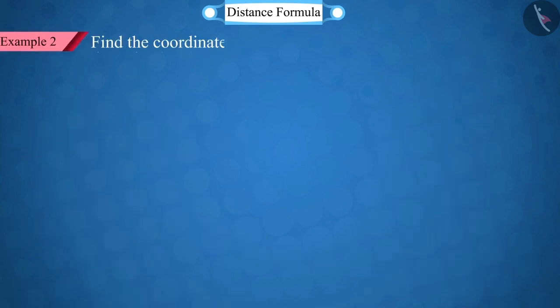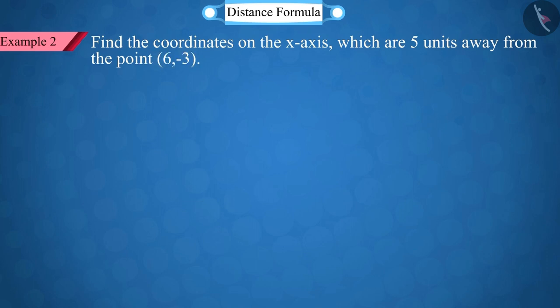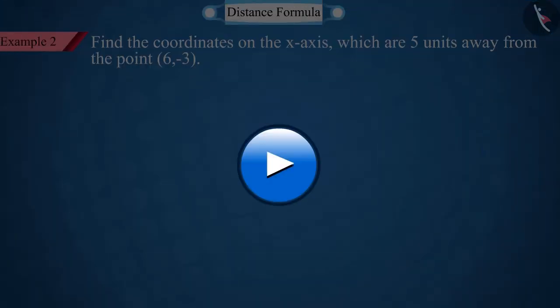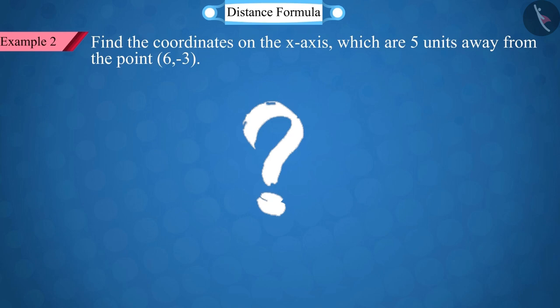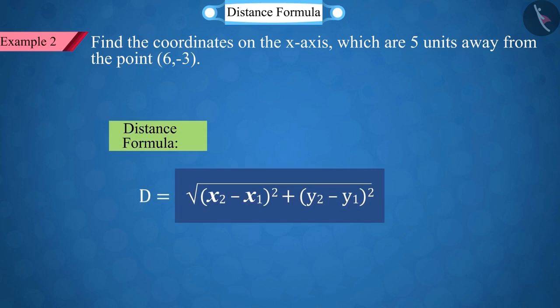Let's look at another example. Find the coordinates of the points on the x-axis, which is 5 units away from the point (6, -3). Pause the video to solve, and then check your answer. Can you tell what we have to do first? Right answer.